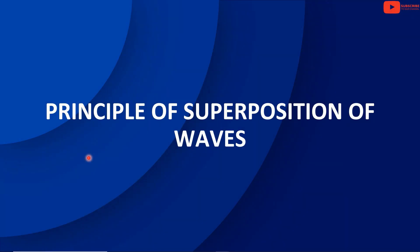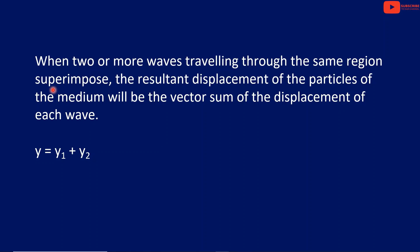We discussed the principle of superposition in the previous video. What is the principle of superposition? The resultant displacement of the medium will be the vector sum of the displacement of each wave. The resultant displacement y is equal to y1 plus y2.